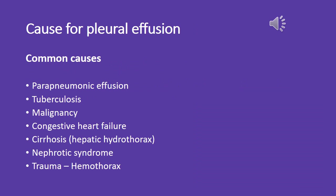Common causes of pleural effusion include parapneumonic effusion, tuberculosis, malignancy, congestive heart failure, cirrhosis, hepatic hydrothorax, nephrotic syndrome, trauma, and hemothorax.